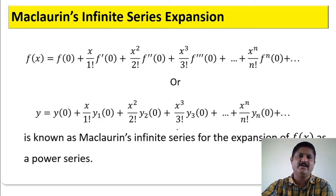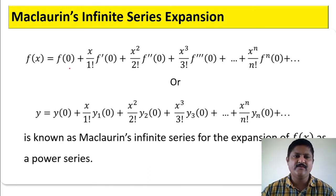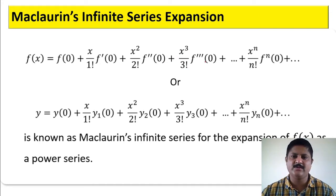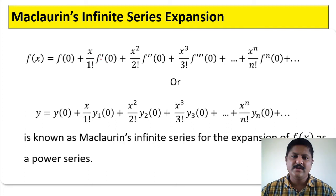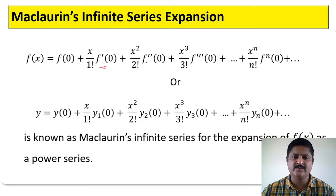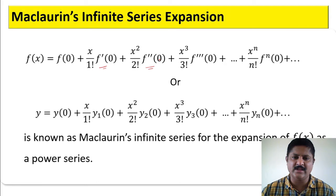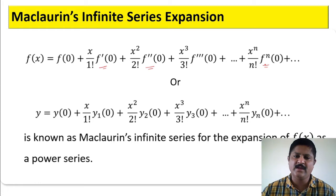The Maclaurin's infinite series expansion is given by f(x) equals f(0) plus x over 1 factorial into f'(0) plus x squared over 2 factorial into f''(0) plus x cubed over 3 factorial into f'''(0) plus so on plus x to the power n divided by n factorial into f^n(0). Where f'(0) is the first order derivative of the function at x equals 0, f''(0) is the second order derivative at x equals 0, and in general f^n(0) is the nth order derivative at x equals 0.